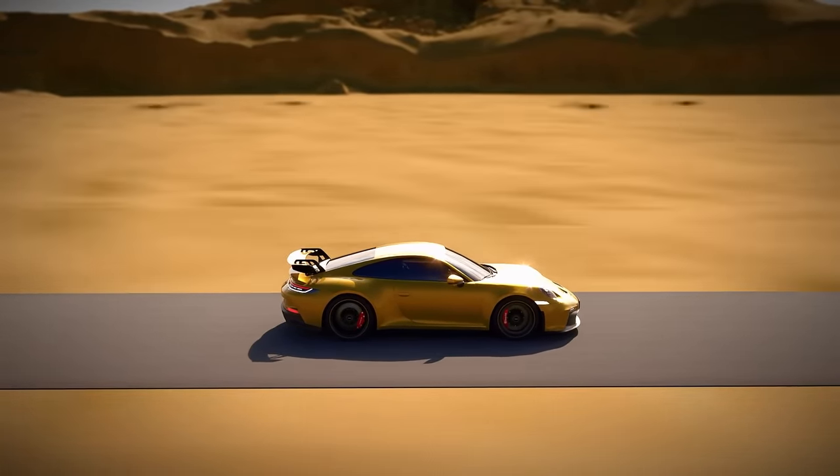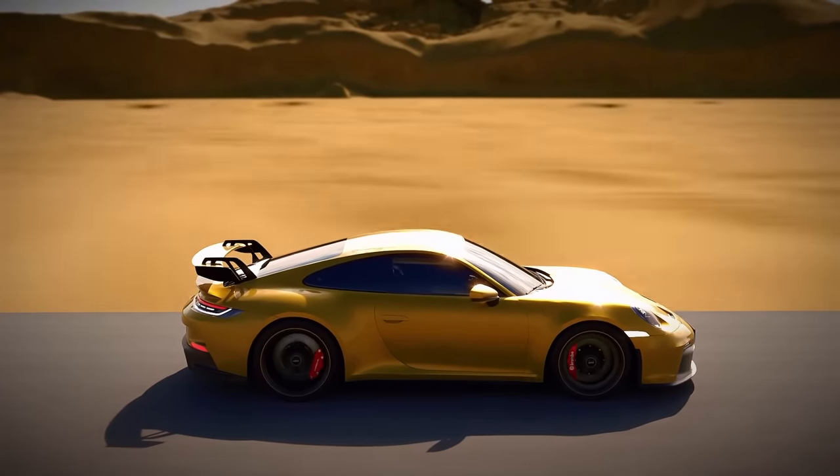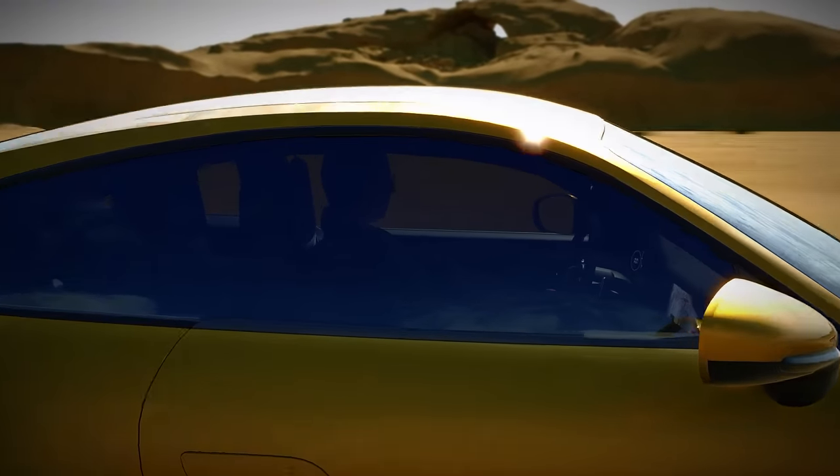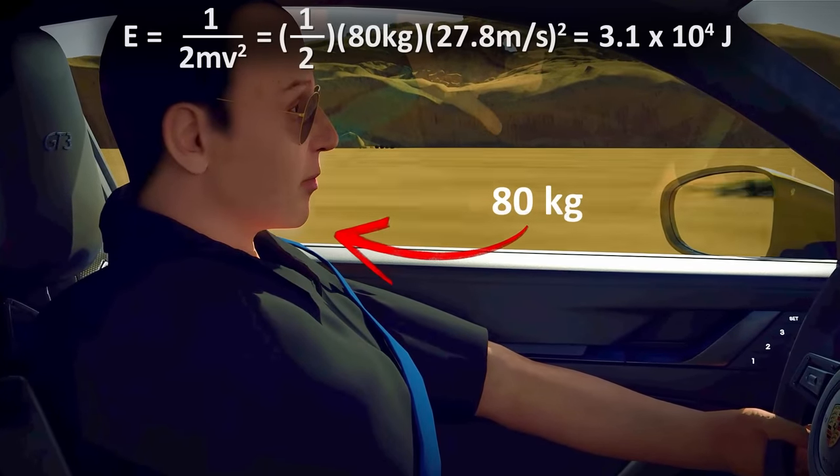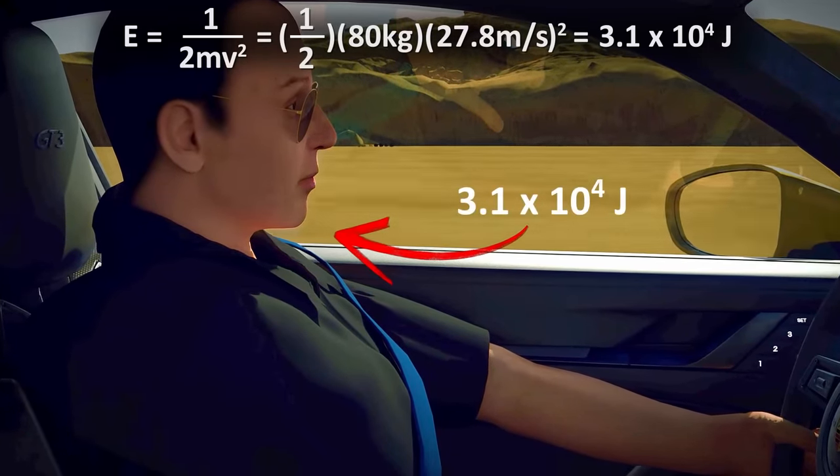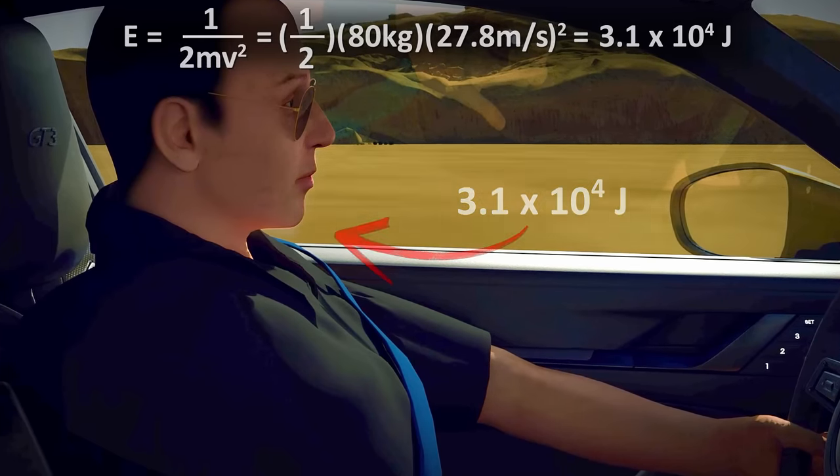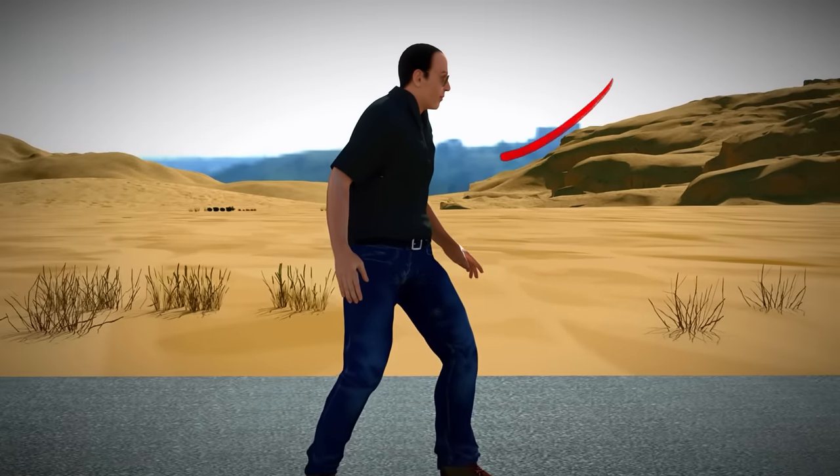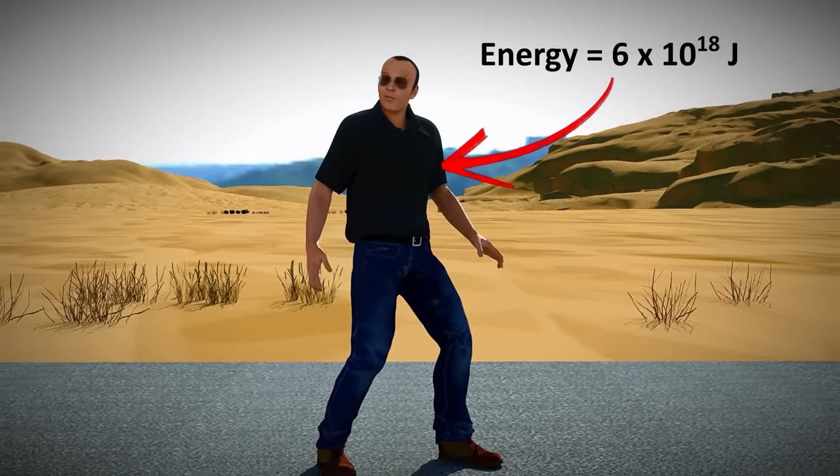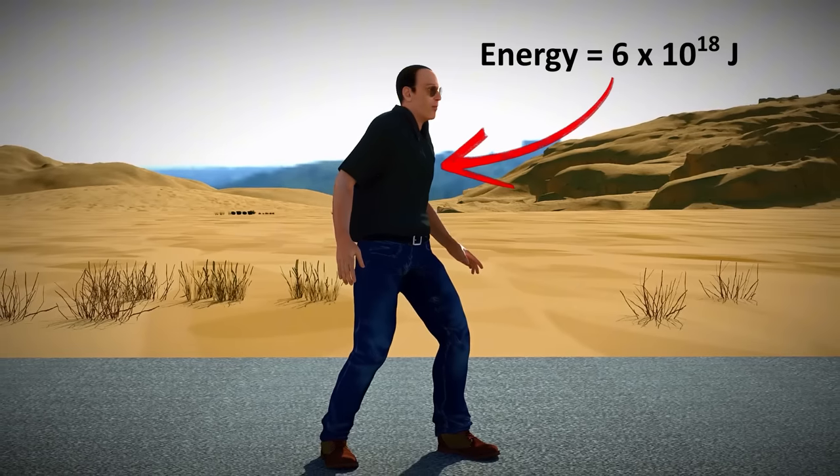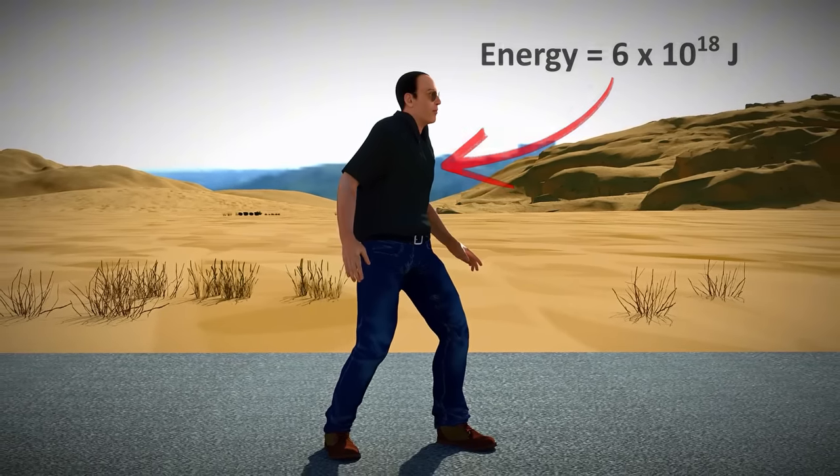And since you are sitting in that car, also moving at 100 km per hour, you have energy too. If you weigh 80 kg, you can use the equation to find that your energy is equal to about 3.1 times 10 to the 4 joules. But did you know that the energy you have standing still on the ground, not moving at all, is more than 100 trillion times that? Over 6 times 10 to the 18 joules. How is this possible?